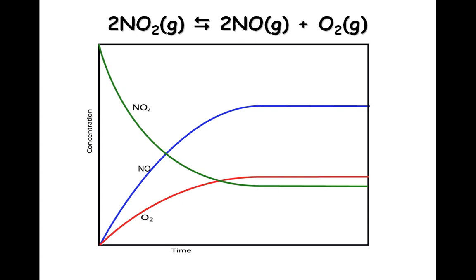Notice in our graph, concentration is the y-axis and time is the x-axis. We start out with NO₂ at fairly high concentration, and we start out with no NO and no oxygen. Then slowly, the NO and O₂ begin to form as the NO₂ begins to decompose. Notice the flatlining — once you reach a flatline concentration, reactants and products are still changing back and forth, but for every two NO₂s that decompose, two NOs and one oxygen come back. So there is basically no net change in concentration, and this is the point at which the reaction is at equilibrium.